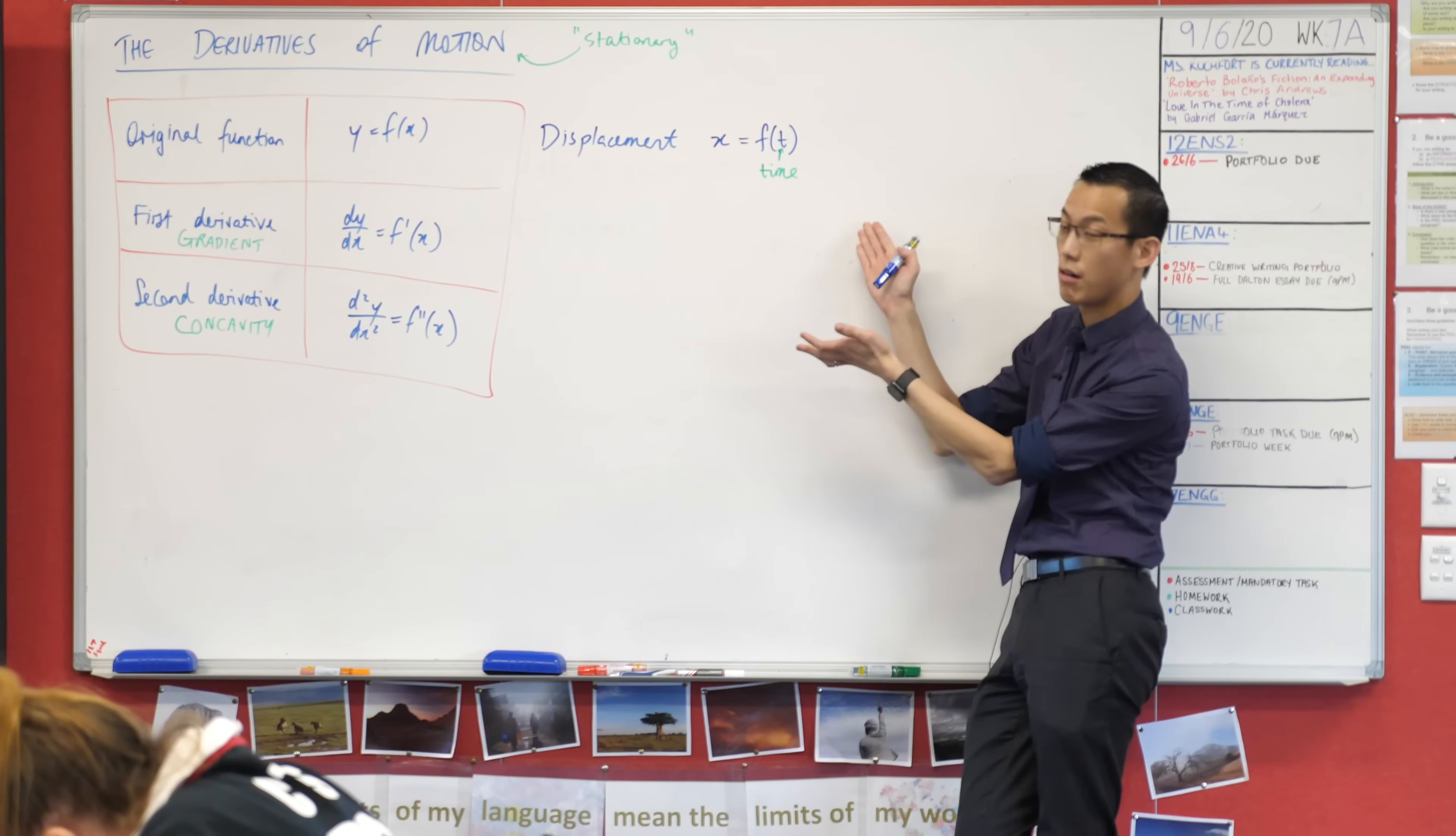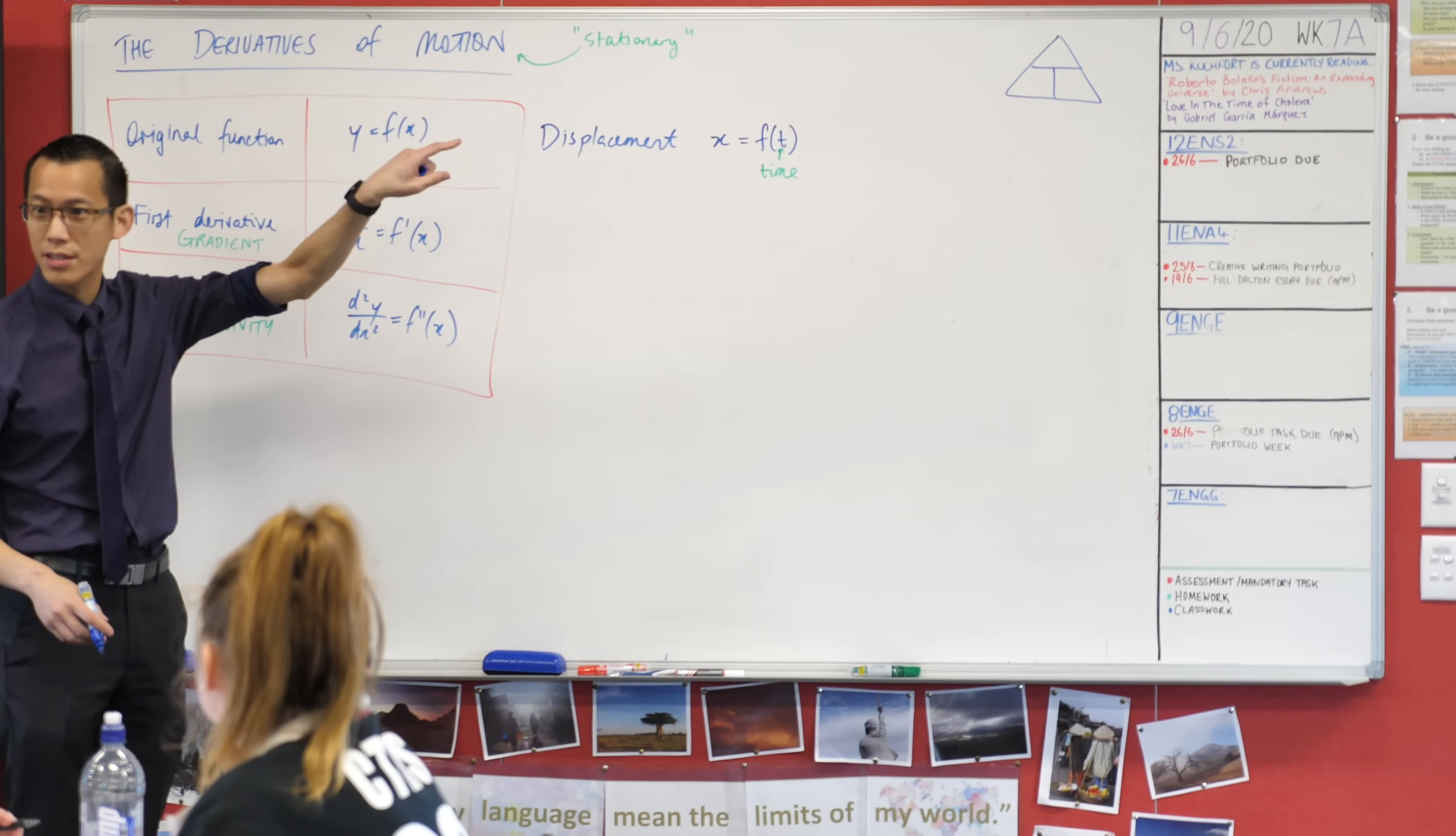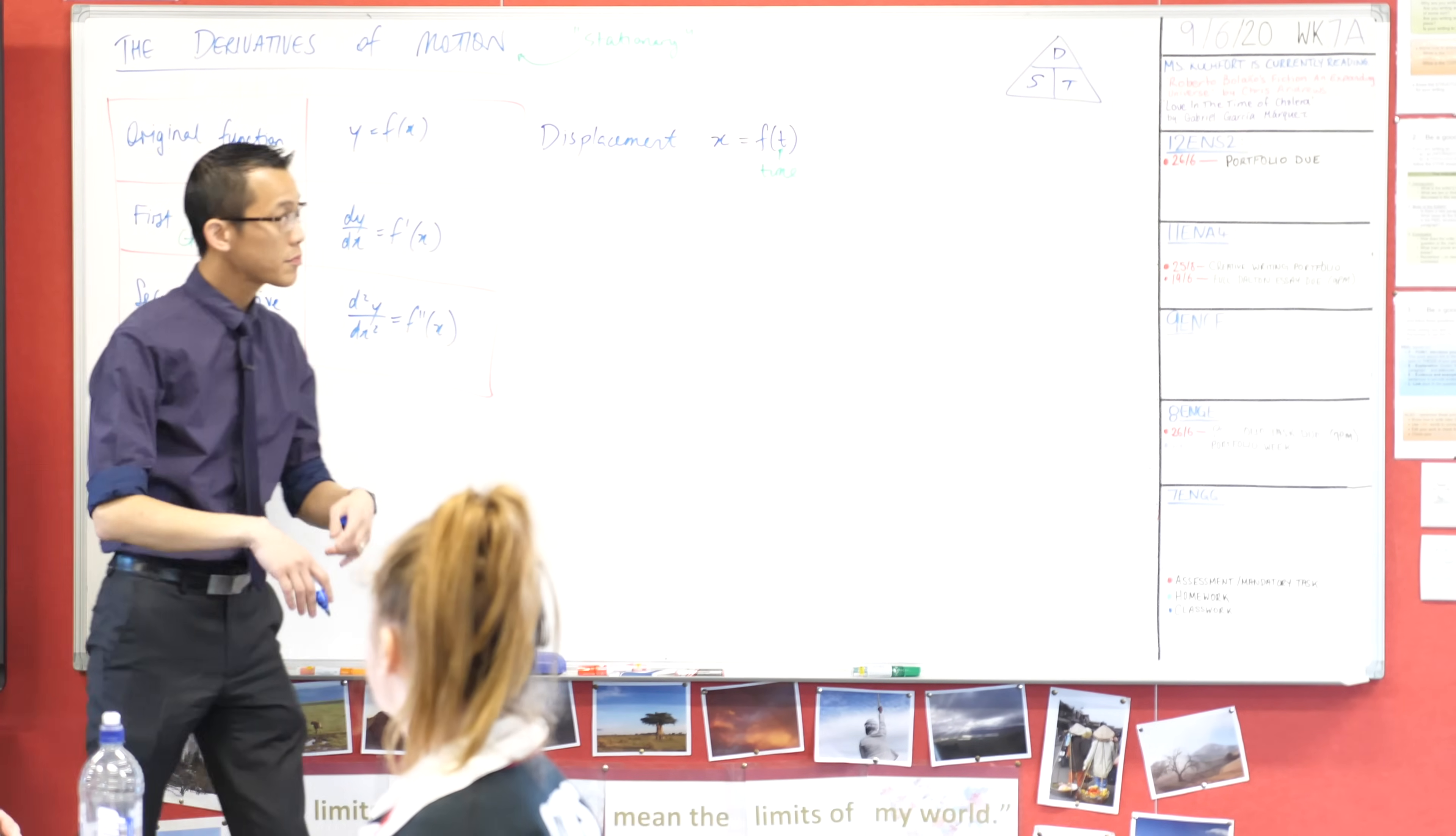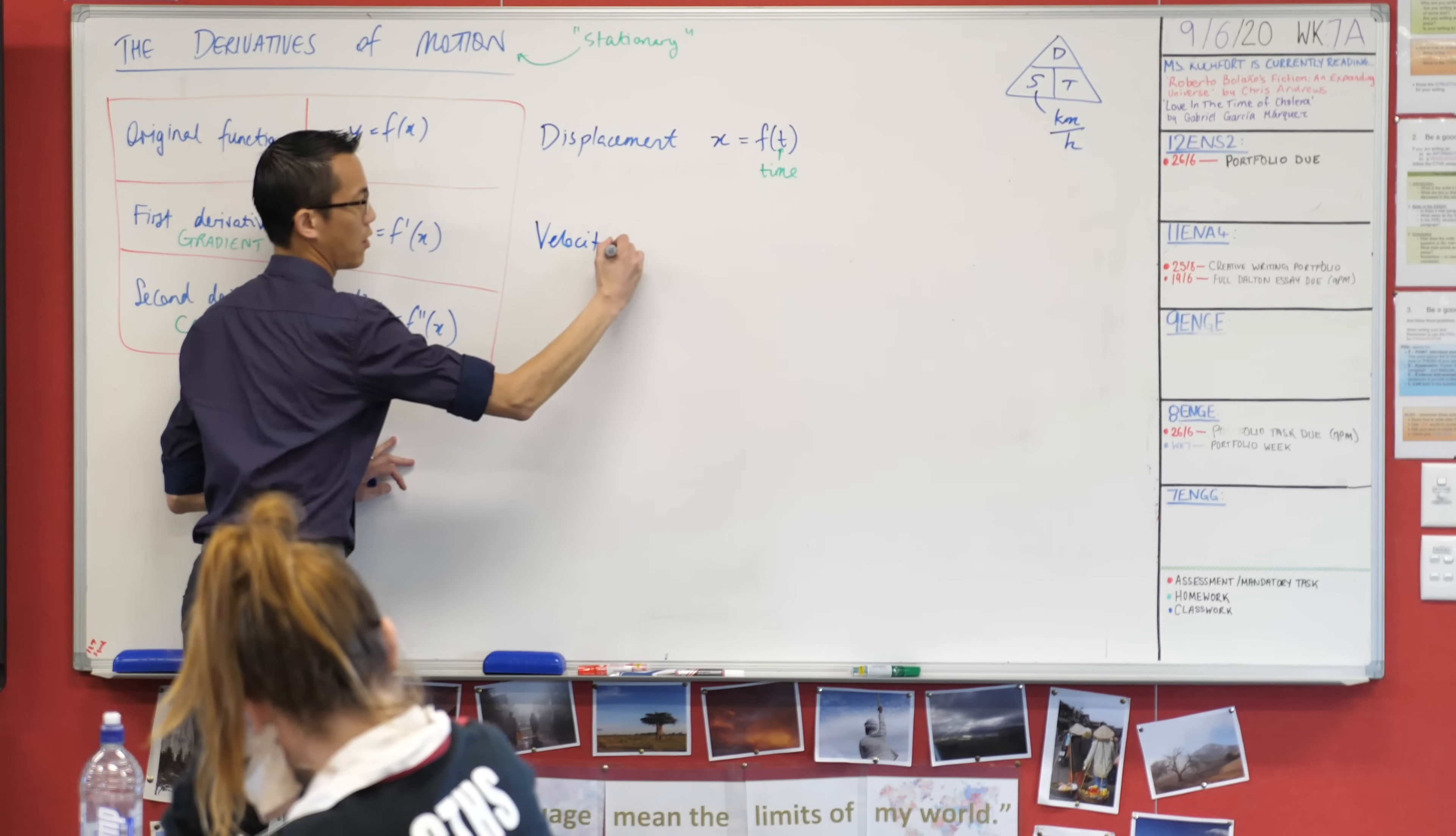Since we've got a function about time, we're going to differentiate with respect to time. How's your displacement changing as time changes? If you think back to this triangle, you remember from year 8 or year 9 - distance, speed, and time. We would say speed is distance over time. Even the units of speed, like kilometers per hour, suggest distance on the top and time on the bottom. Now we're going to be more specific than speed - we use the word velocity.